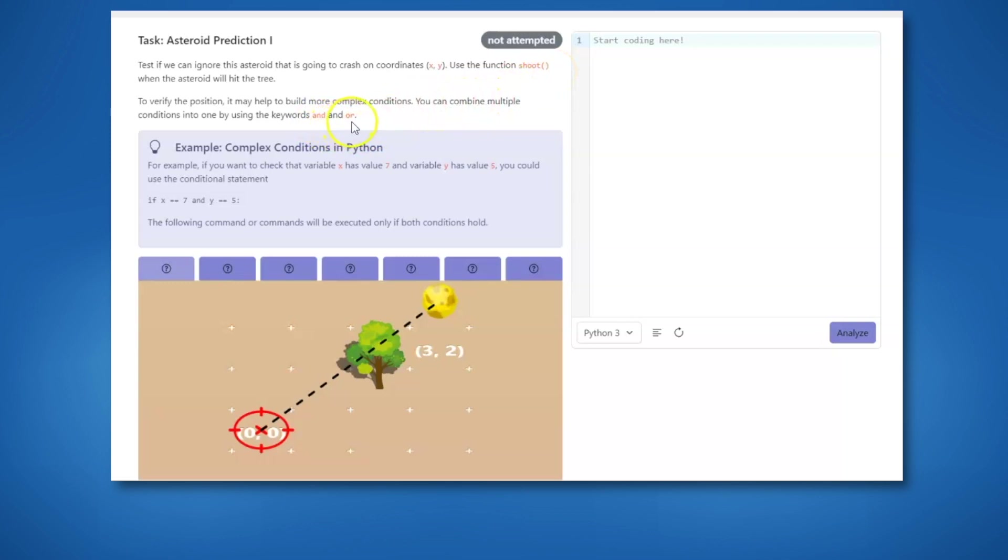Use the AND and OR operators to create a set of conditions that will initiate the shoot command when necessary. We will need to check if both the x coordinate and the y coordinate match the trajectory of the asteroid. Which logical operator checks if both conditions are true? That's right, the AND operator! Fill in the rest of the code and protect our newly planted tree!